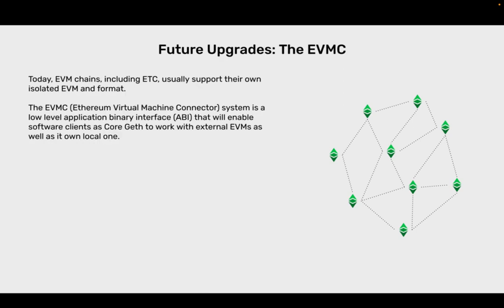Future upgrades: the EVMC. Today, EVM chains including ETC usually support their own isolated EVM and format. The EVMC — Ethereum Virtual Machine Connector — is a low-level application binary ABI that will enable software clients such as CoreGeth to work with external EVMs as well as its own local one.